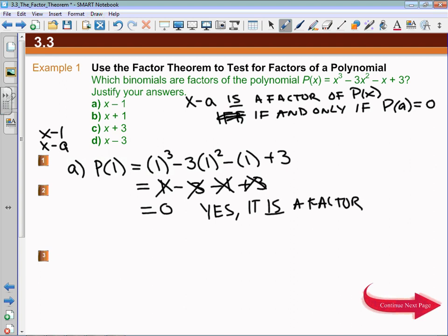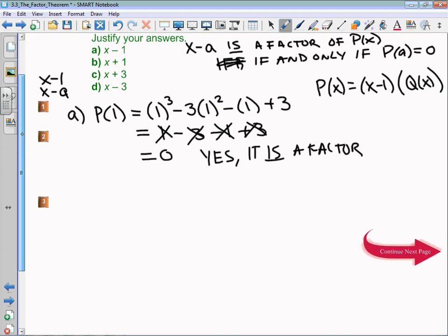Remember that really means that polynomial P(x) can be written as x minus 1 times some quotient function that we don't know yet. Long division would allow us to do that, and we're going to do that later in 3.3, but not for this example.